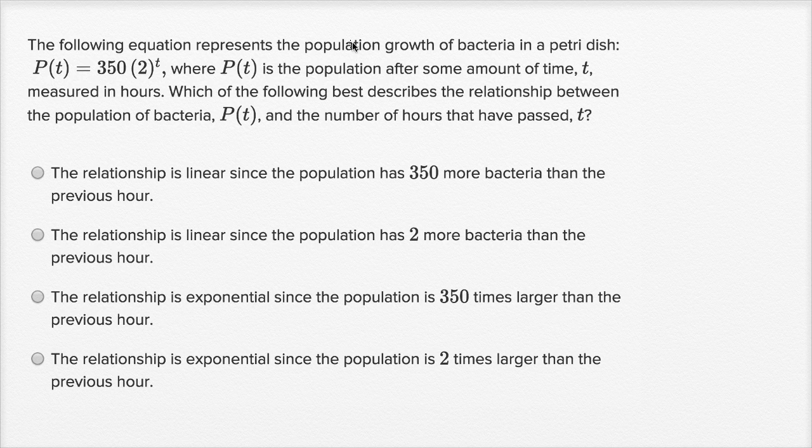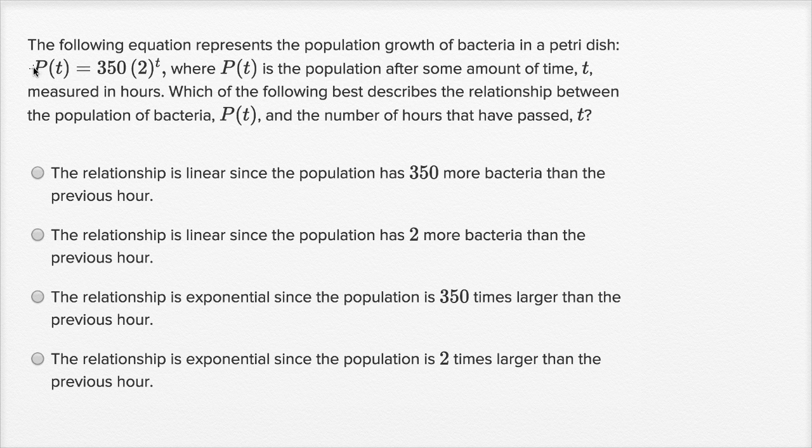The following equation represents the population growth of bacteria in a petri dish. The population as a function of time is equal to 350 times 2 to the t power, where P(t) is the population after some amount of time t, measured in hours.